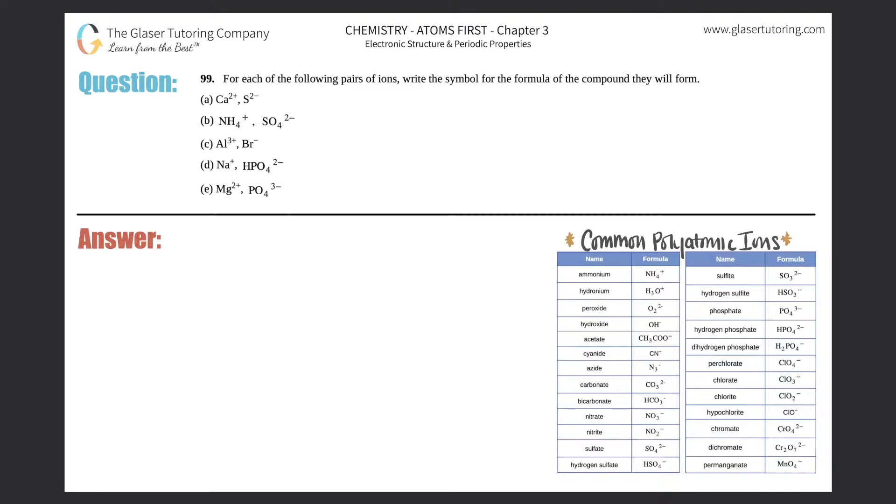Number 99: For each of the following pairs of ions, write the symbol for the formula of the compound they will form. I have a through e, so I'm going to write down a, b, c, then we'll do d and e down here.